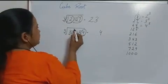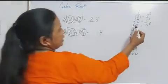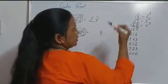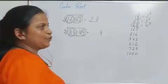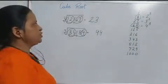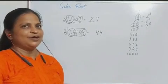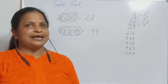Then we will see the other group, 85. Before 85, what is the nearest cube? That is 64. So 4. It means the cube root of 85,184 is 44. Let's take another example.